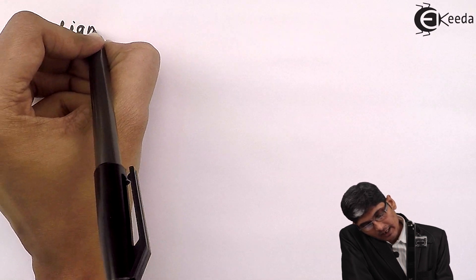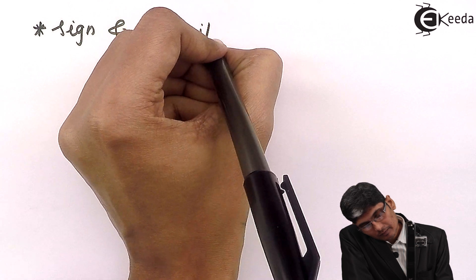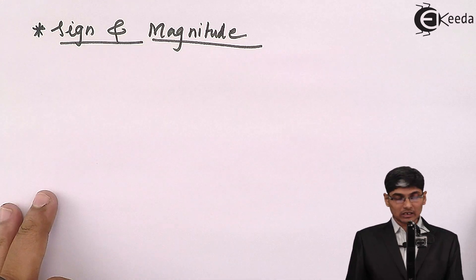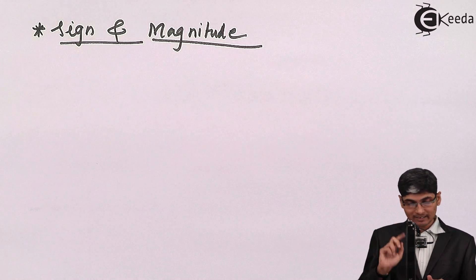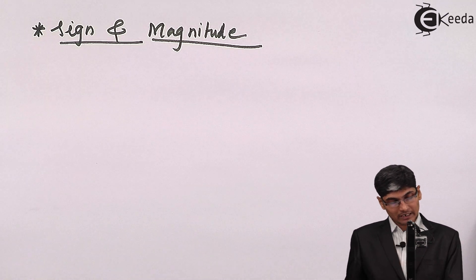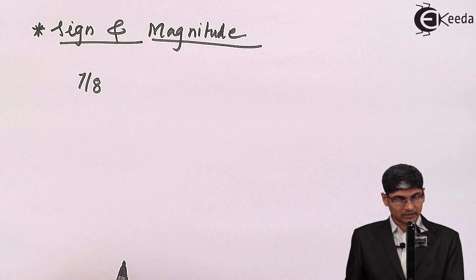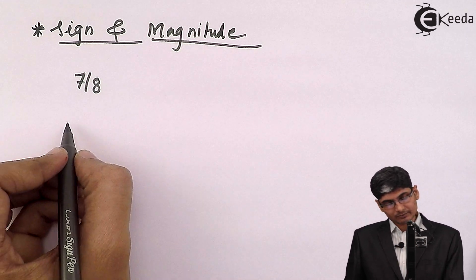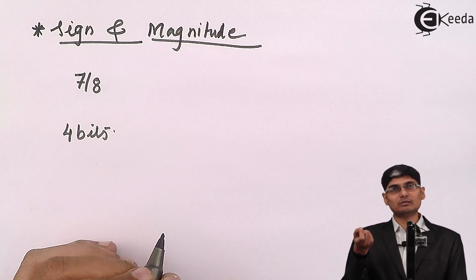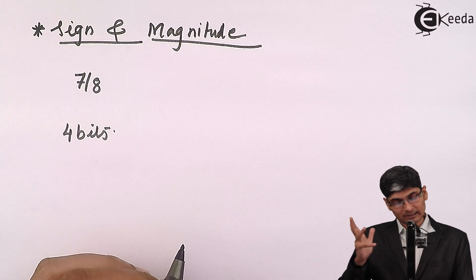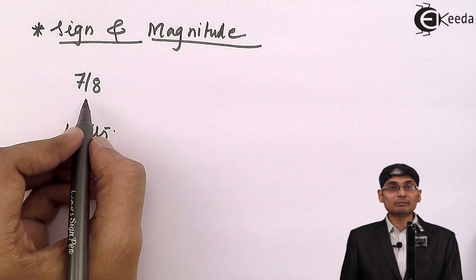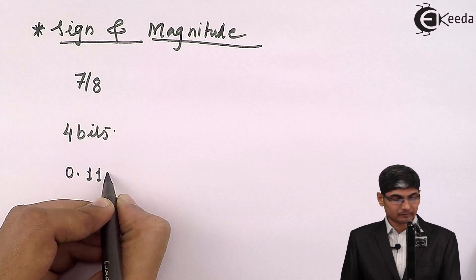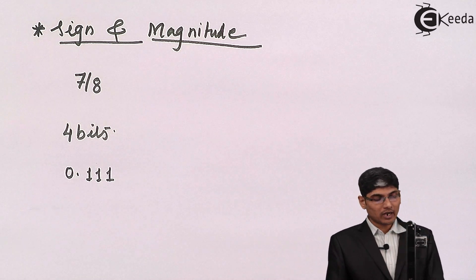In sign and magnitude form, the negative number is represented using a sign bit and a magnitude. For example, let's take the number 7/8 — positive — and also minus 7/8, represented using 4 bits total. So for 7/8 represented using 4 bits, the fixed point fractional number is 0.111.